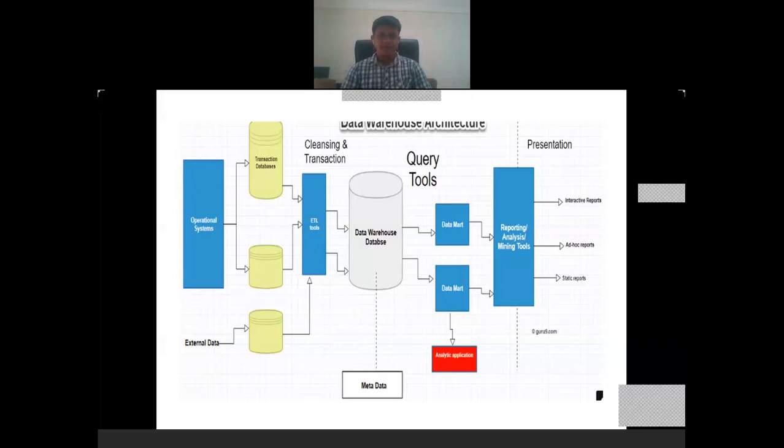So this is the data warehouse architecture. It is very easy to understand the data warehouse architecture. Here we'll start as I discussed earlier, we are having operational systems. So whatever systems which are currently in use, they are operational systems.